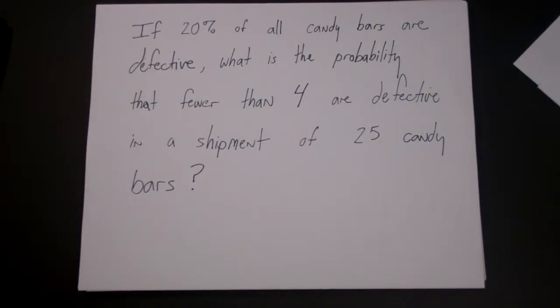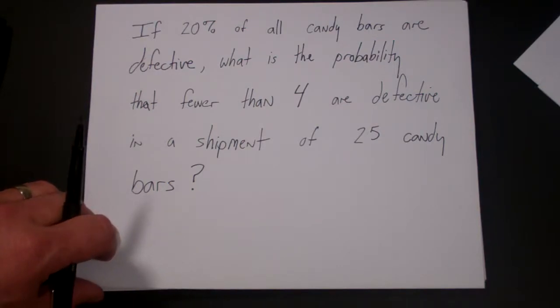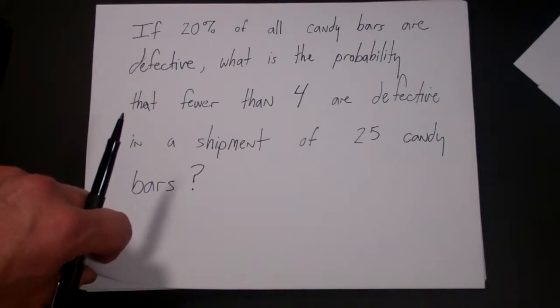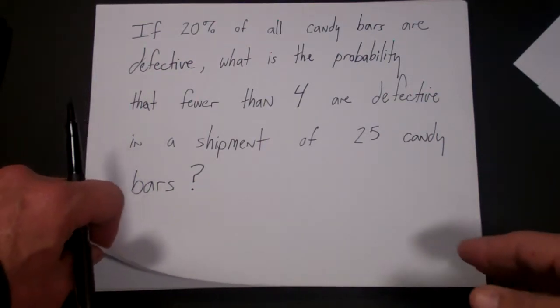Let's make sure we understand the problem. You're a candy bar factory owner, you're shipping out boxes of candy in 25 packages, and you know that if you have more than four, then people will start complaining. So what's the probability that you have fewer than four bad ones in any given shipment? Some shipments will have fewer than four bad ones and some more, we just want to know what's the probability there.